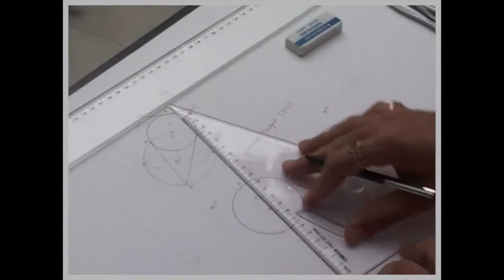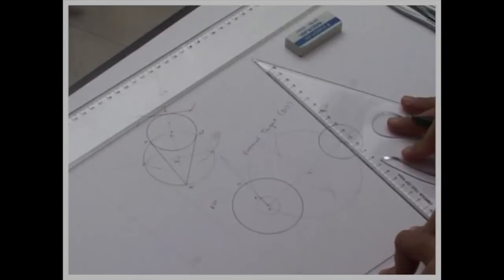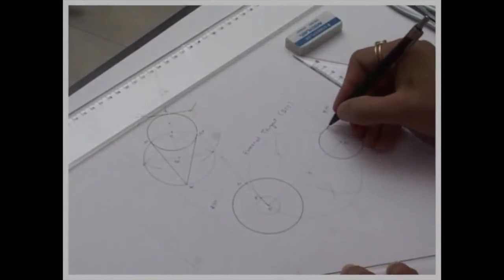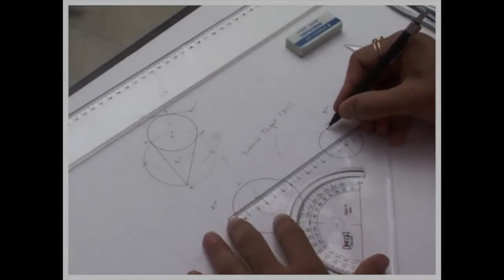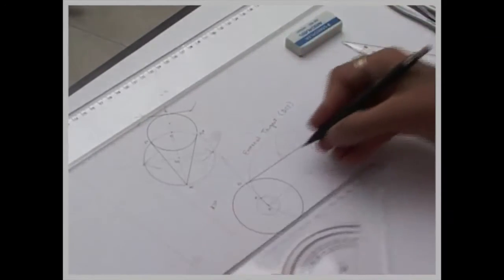Now draw a parallel line. You know how to draw a parallel line. Wherever it touches, that is point T2. Now join T1 to T2. So that is your external tangent.